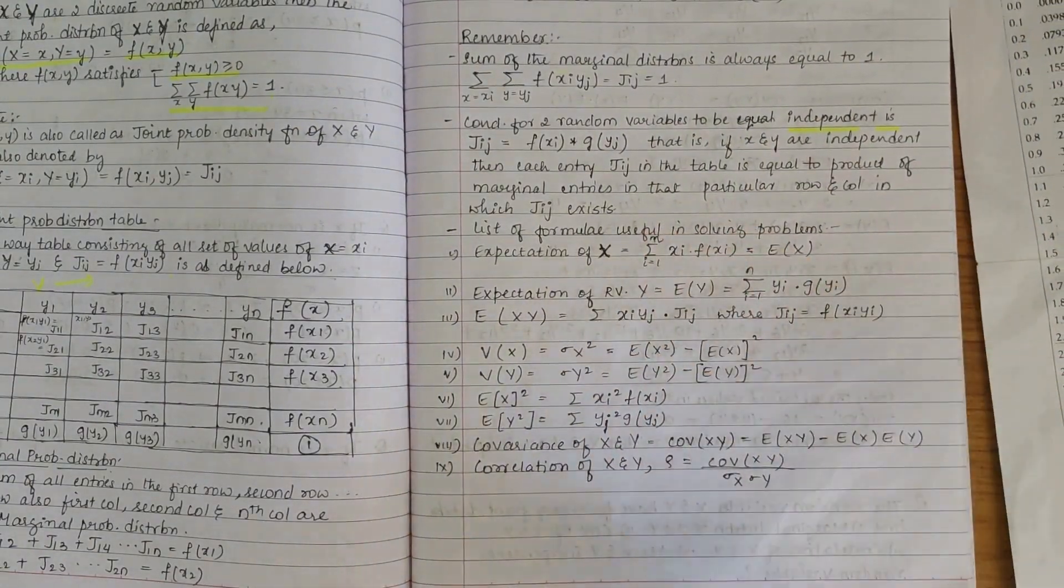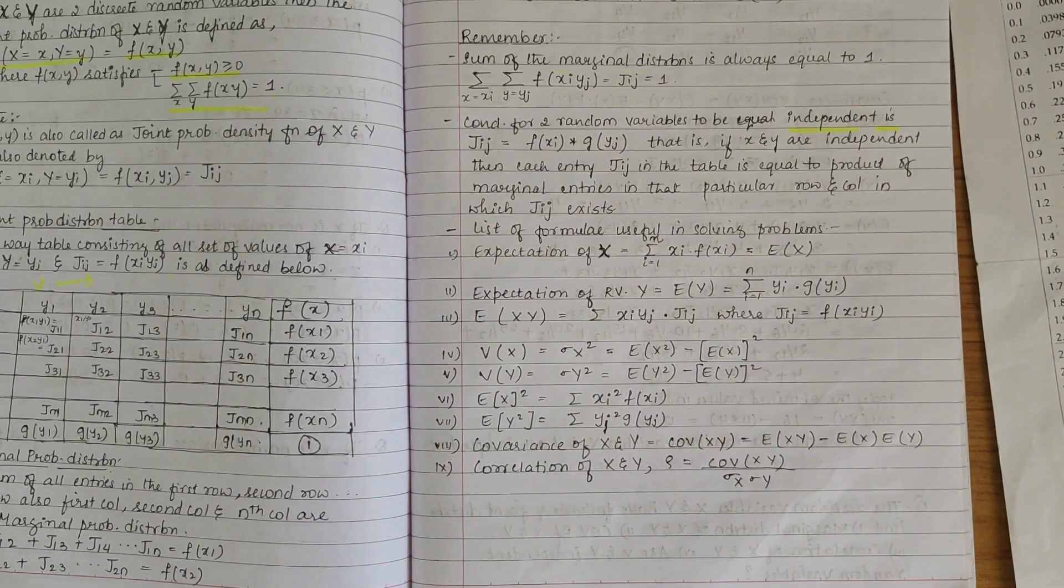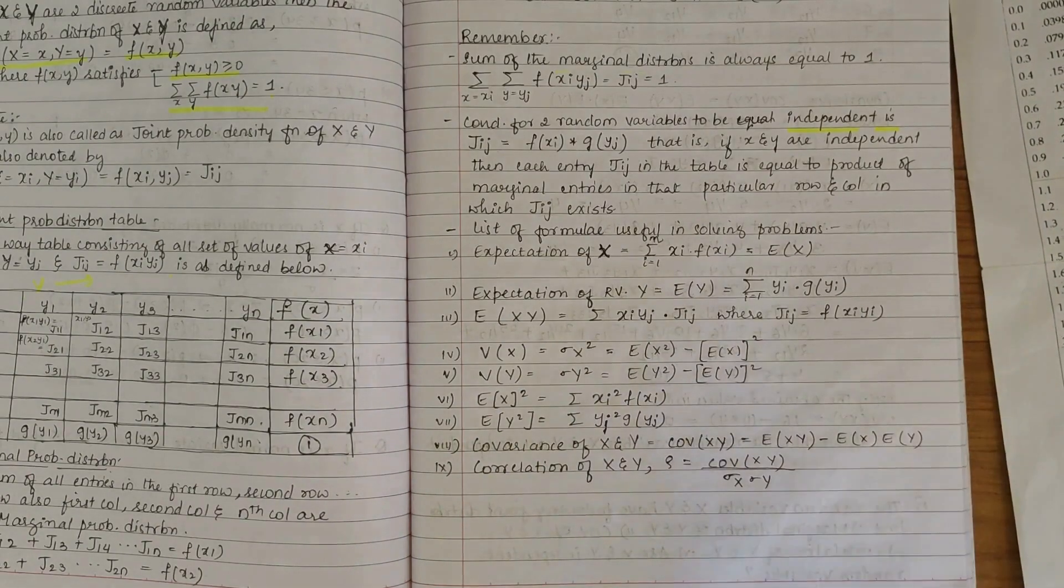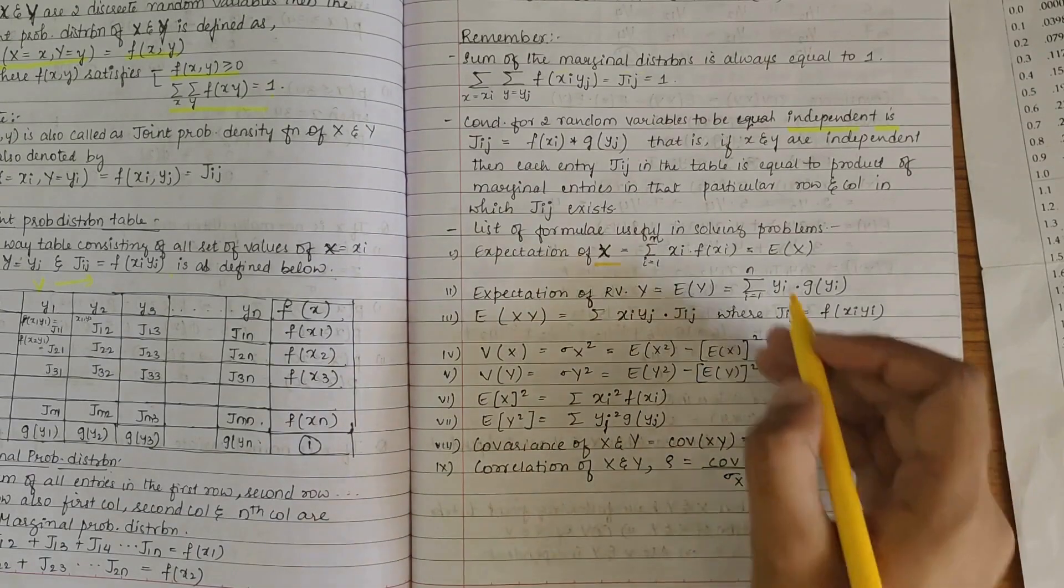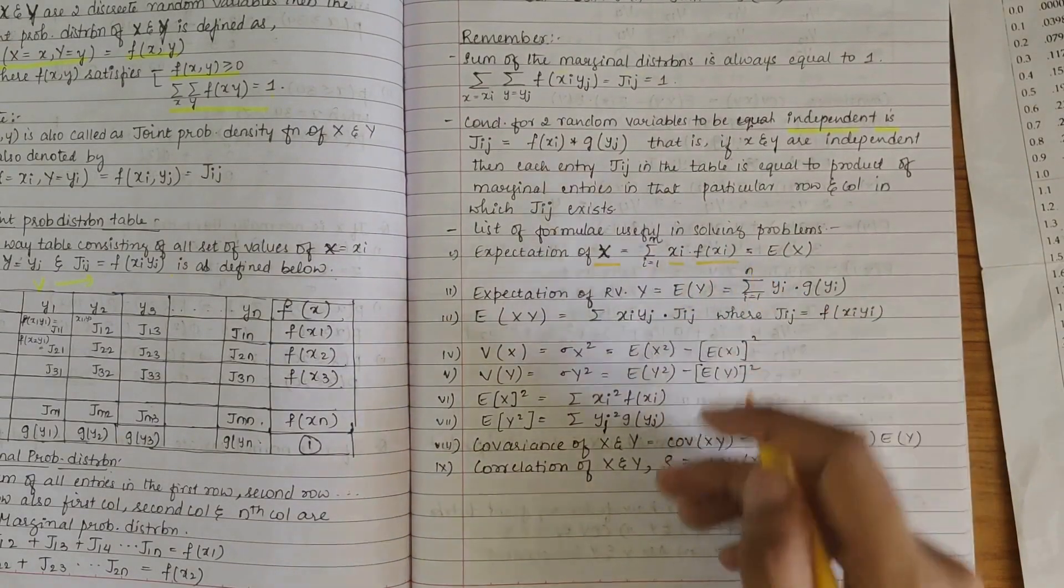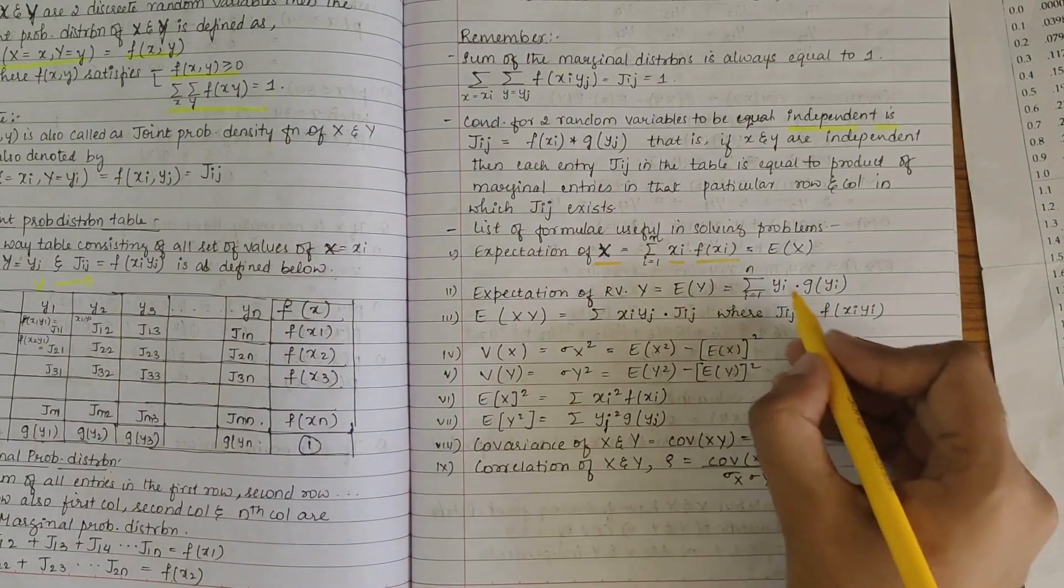So the first one is expectation of X. Expectation of X is Xi into f(Xi). Expectation of Y is Yi into g(Yi), summation of Yi into g(Yi).